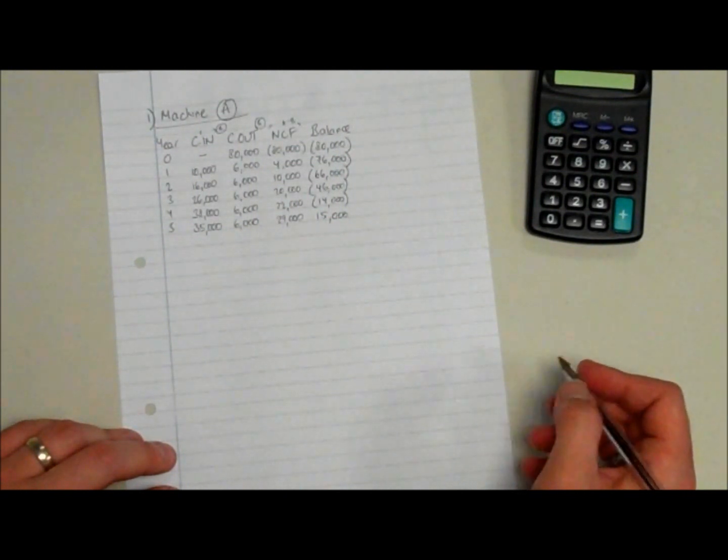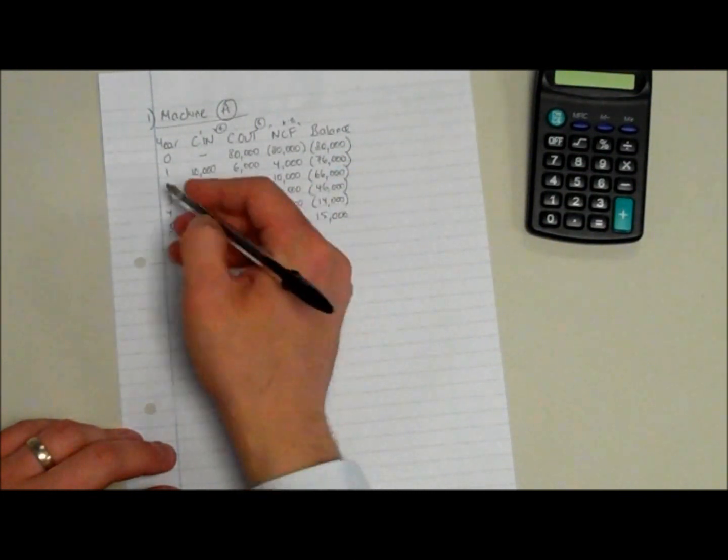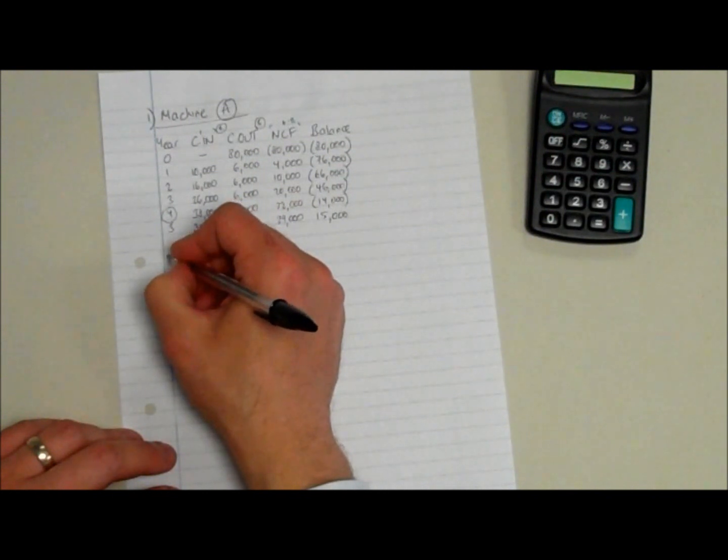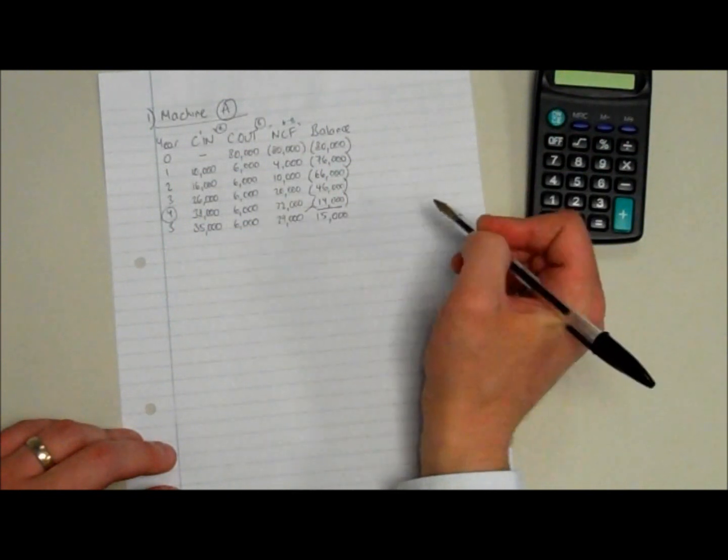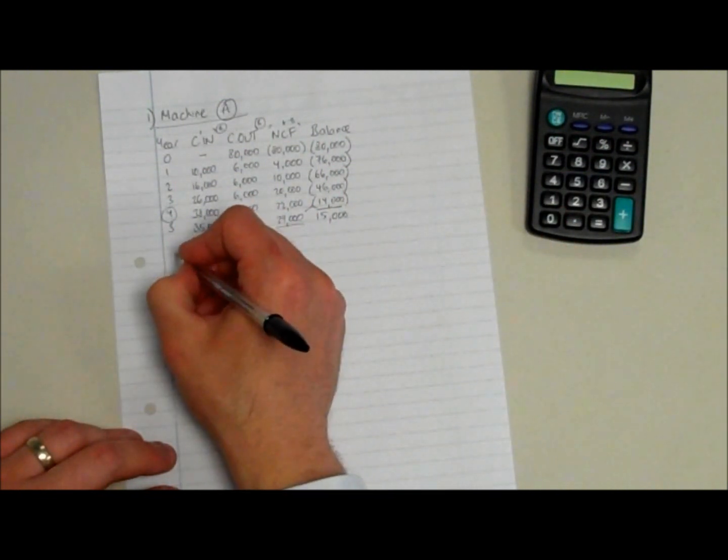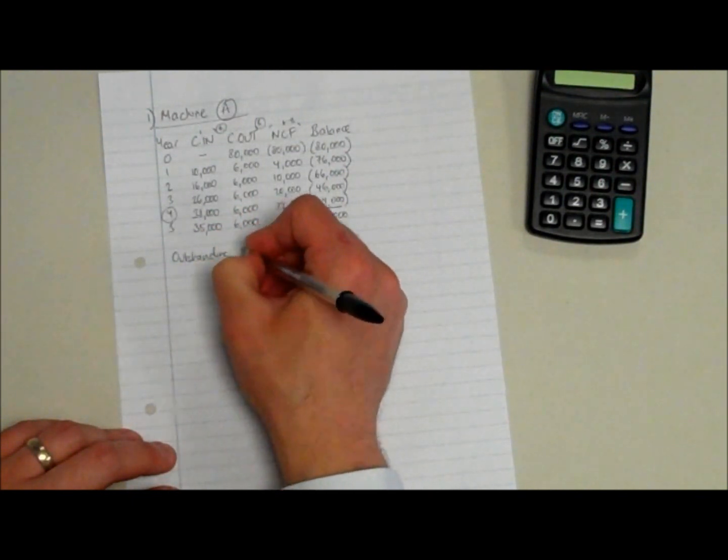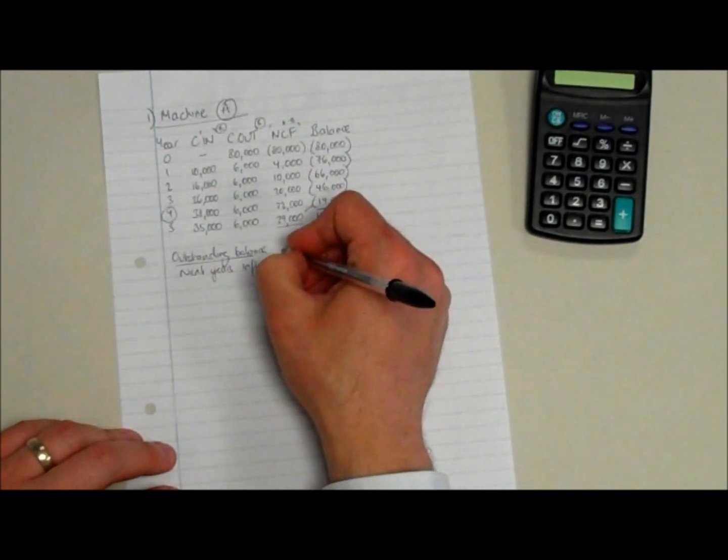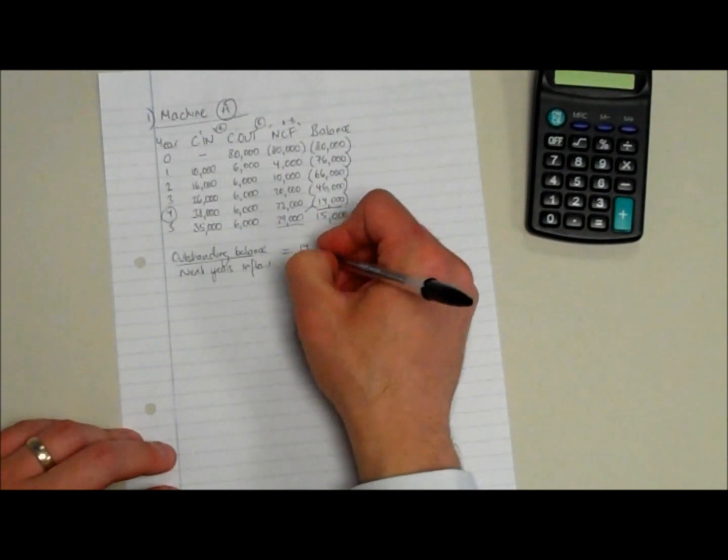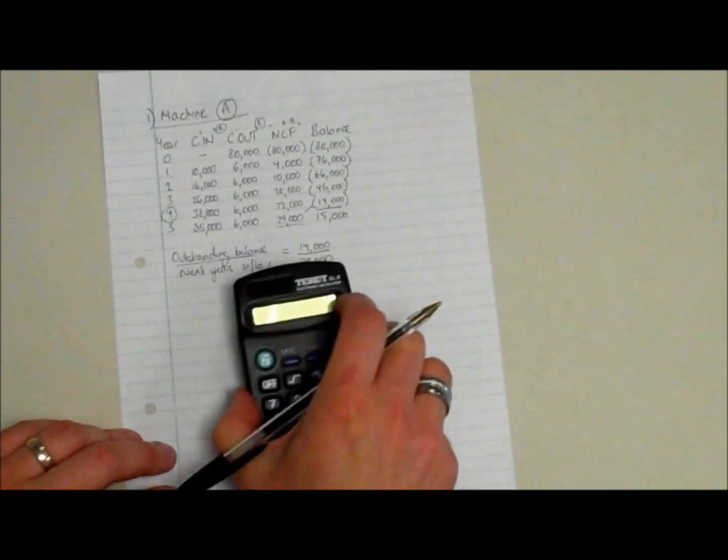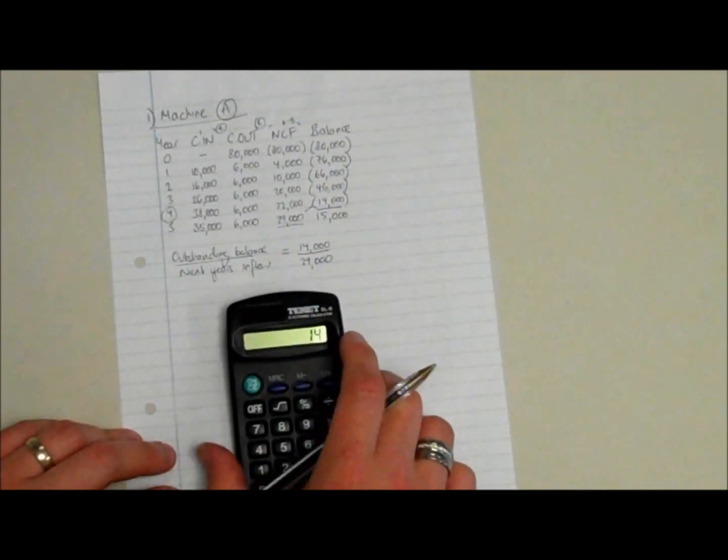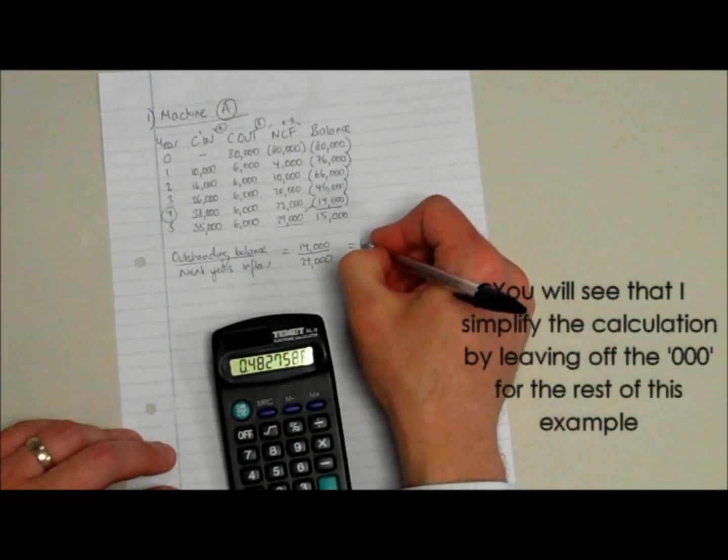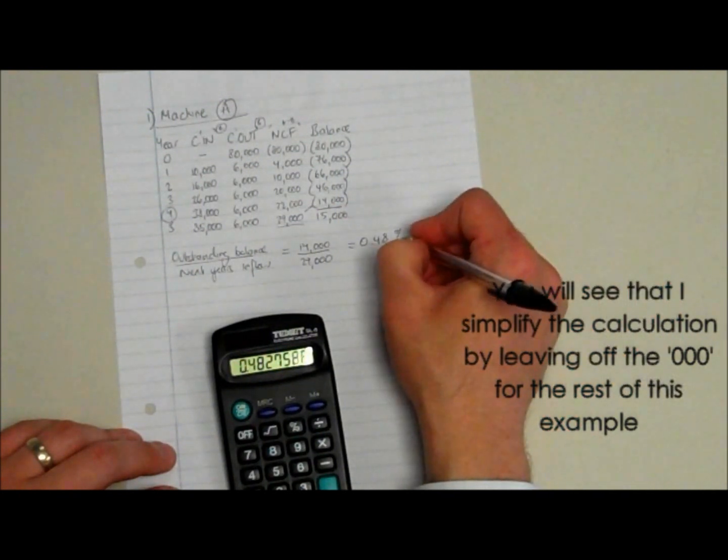So when do we pay back? Look for the final negative figure. If you've done the year process like I've done with the column here, that is your stated year. So it's four years and, because it's not a nice neat figure of zero here, a certain number of months. To work that out, we need to think about how much do we still need: £14,000. In that year, we get 29. So our formula is the outstanding balance divided by our next year's inflow. That tells us the percentage of the year that will go by. £14,000 divided by £29,000 is 0.48 percent of a year.